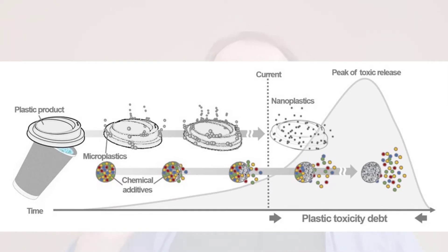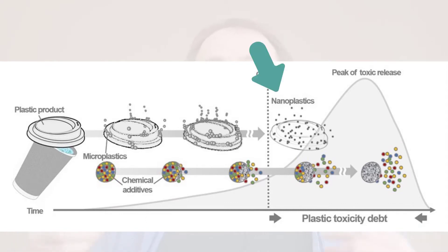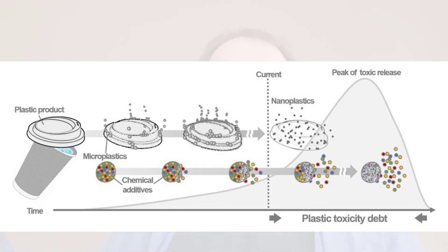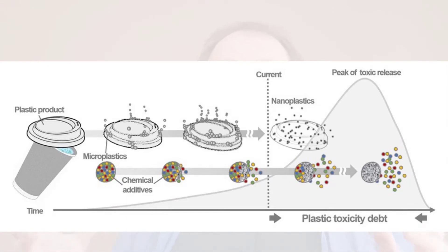Additionally, as plastic particles fragment into smaller and smaller pieces, they're not really effectively degraded but rather reduced in size, eventually reaching nano-sized particles — nanoplastics. Nanoplastics are themselves frequently toxic in their effects on biota. Both the additives and impurities that diffuse out of plastic particles, and the formation of nano-sized plastic particles, together contribute to this hypothesized plastic toxicity debt.